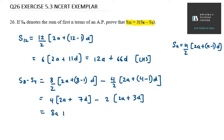We get 8a plus 7 into 4 is 28d minus 4a minus 6d. So we get 4a plus 22d.